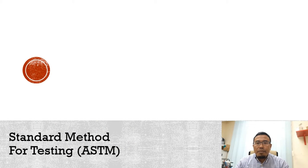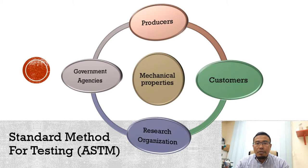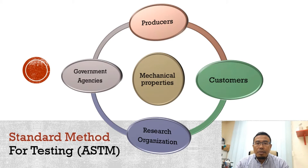Mechanical properties are of concern to many parties — for example, producers and consumers of materials, research organizations, and government agencies that have different interests. Therefore, consistency in testing materials is needed. The common standard used is ASTM, the American Society for Testing and Materials Standards.